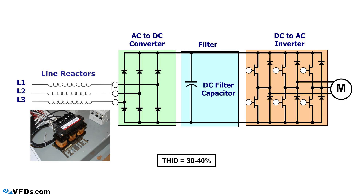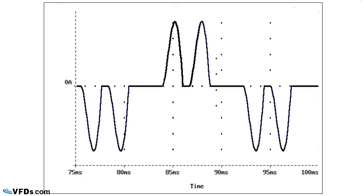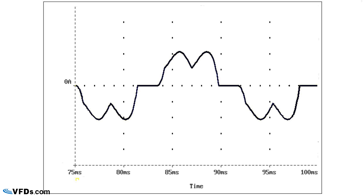So this reduces our harmonics from 100% down to maybe 30-plus percent. Let's take a look at the actual waveforms that we get. This is a waveform without reactors, and you can see for a three-phase input drive, we get two large pulses of current on the positive side and then two on the negative side with each cycle. If we add line reactors to this, you'll notice that it makes a considerable improvement. Now this is not a sine wave — it still has some power system pollution, but not nearly as bad as the previous slide. This eliminates two-thirds of our harmonics.